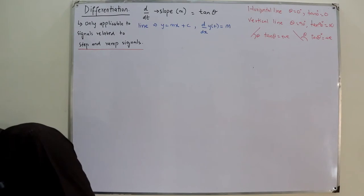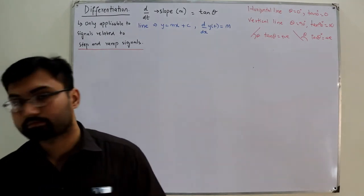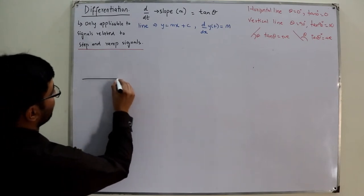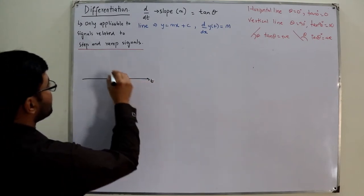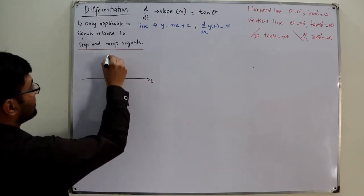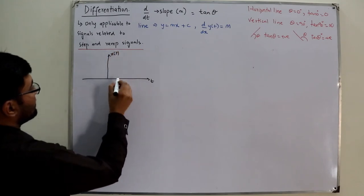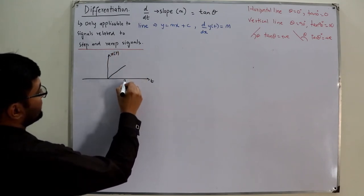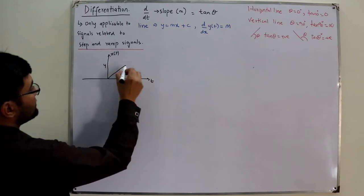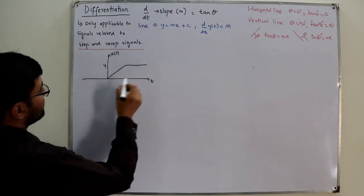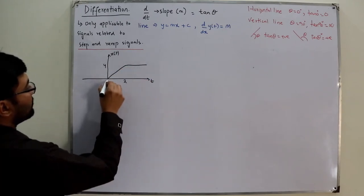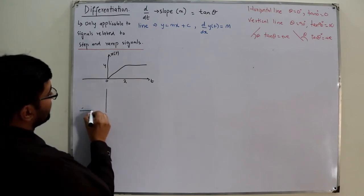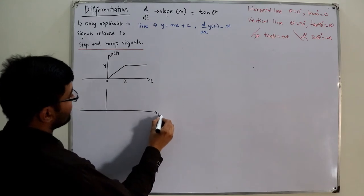Let us consider an example. I am given x(t): on the time axis, from 0 to 2 it increases linearly reaching an amplitude of 4, and after 2 it stays constant at 4. Before 0 it is zero. Now if I am asked to give the derivative of x(t)...